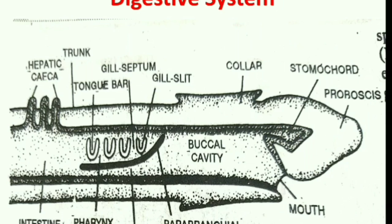The mouth is present just between the collar and proboscis stalk and remains permanently open. It opens into the buccal cavity — a wide space inside the collar. Very importantly, the roof of the buccal cavity has a tubular diverticulum called the stomochord, which is a blind sac. Earlier it was thought to be similar to a notochord, which is why Balanoglossus was kept under phylum Chordata. But later it was found to be simply an extension of the buccal cavity, not a notochord-like structure.